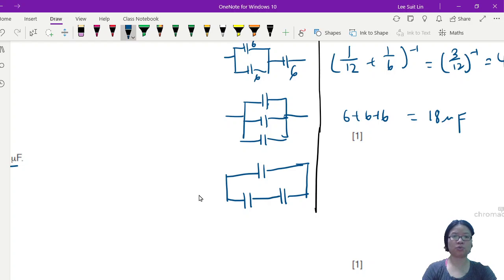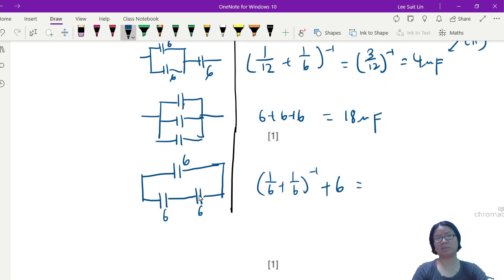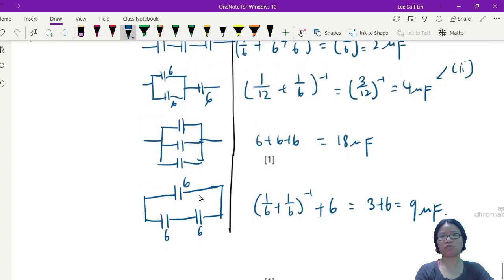Well, my friends, this one you have two in series. Two in series, this six and this six, so I'll start with this one first. One over six plus one over six inverted, plus this six that is in parallel. So what would this one be? This will be three plus six, which is the beautiful nine microfarad.